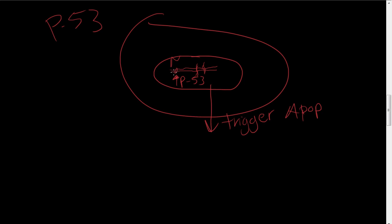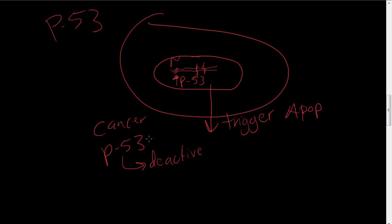P53 scans the DNA to make sure it's okay. They have found that in some cancers, P53 is inactive — deactivated — so the P53 doesn't trigger the cell to undergo apoptosis when it is damaged. That damaged cell then replicates and is copied, and the cancer begins to grow and grow. The whole while, if P53 had been functioning, it could have stopped this cancer.